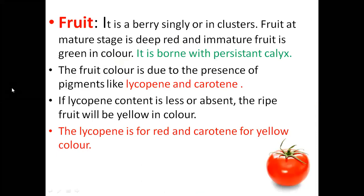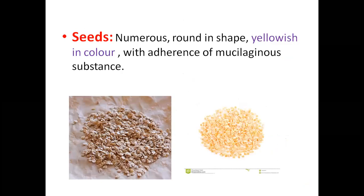Tomato has persistent calyx — not only tomato but brinjal also has persistent calyx. Persistent calyx means the calyx is present with the fruit even after harvesting. In exam the question is 'persistent calyx is observed in which crop,' and the answer expected is brinjal, not tomato. In brinjal, if you remove the calyx, the fruit is not marketable — it is more specific to brinjal than tomato.